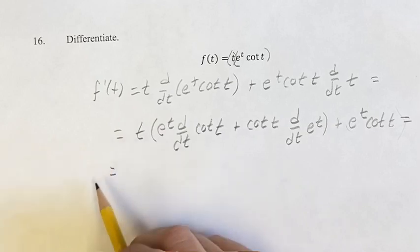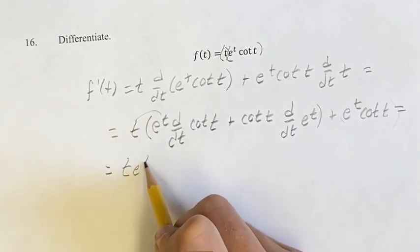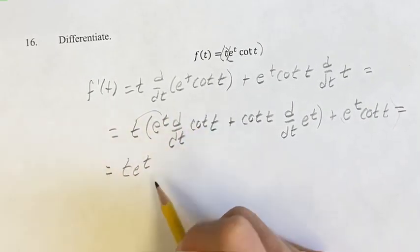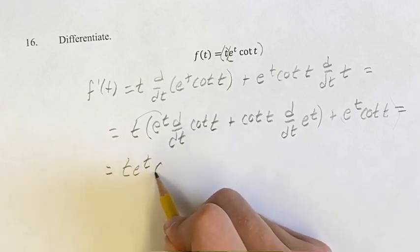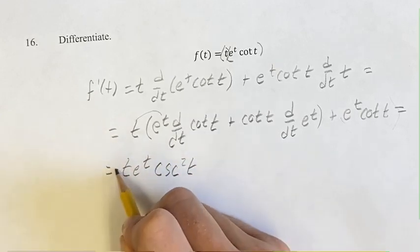So we have te^t times the derivative of cotangent, which is negative cosecant squared. So we have cosecant squared t, and don't forget the negative.